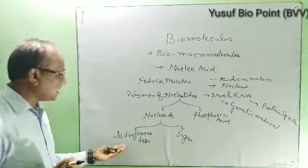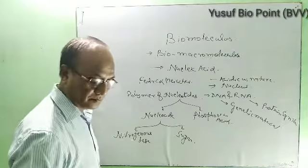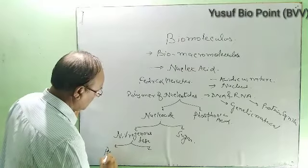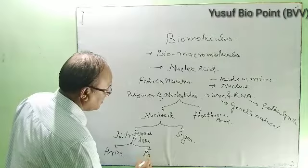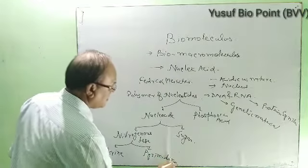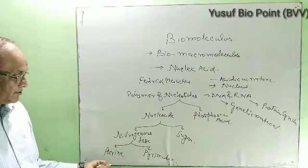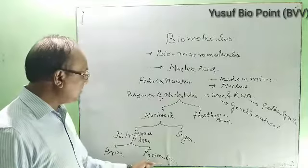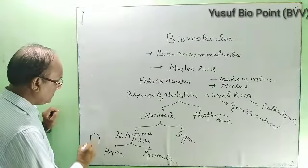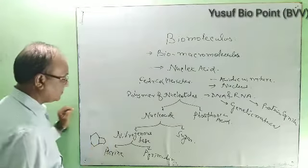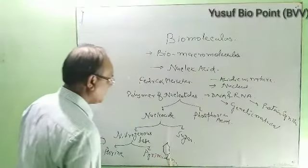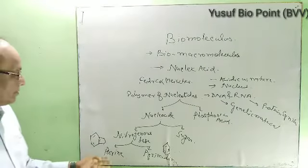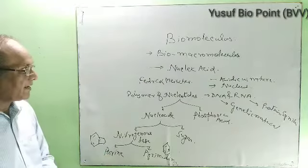Among the nitrogenous bases, one type is purine and the next is pyrimidine. Purines are heterocyclic compounds with two rings, while pyrimidines have only one ring. These are the cyclic compounds that combine as nitrogenous bases.